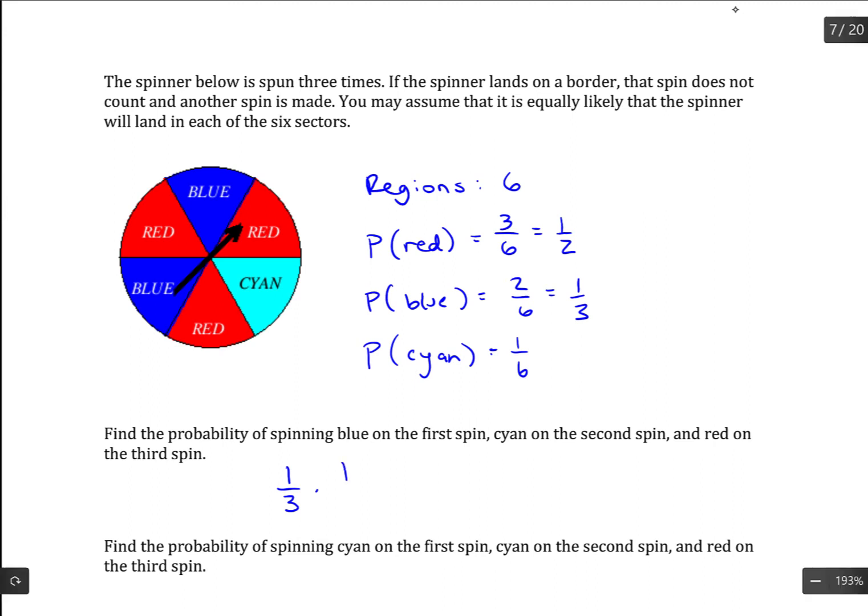So cyan on the second spin is one sixth. Red on the third spin, there's three red regions out of six, which we said was one half. In the numerator, one times one times one is just one. In the denominator, that would be six times six or 36.